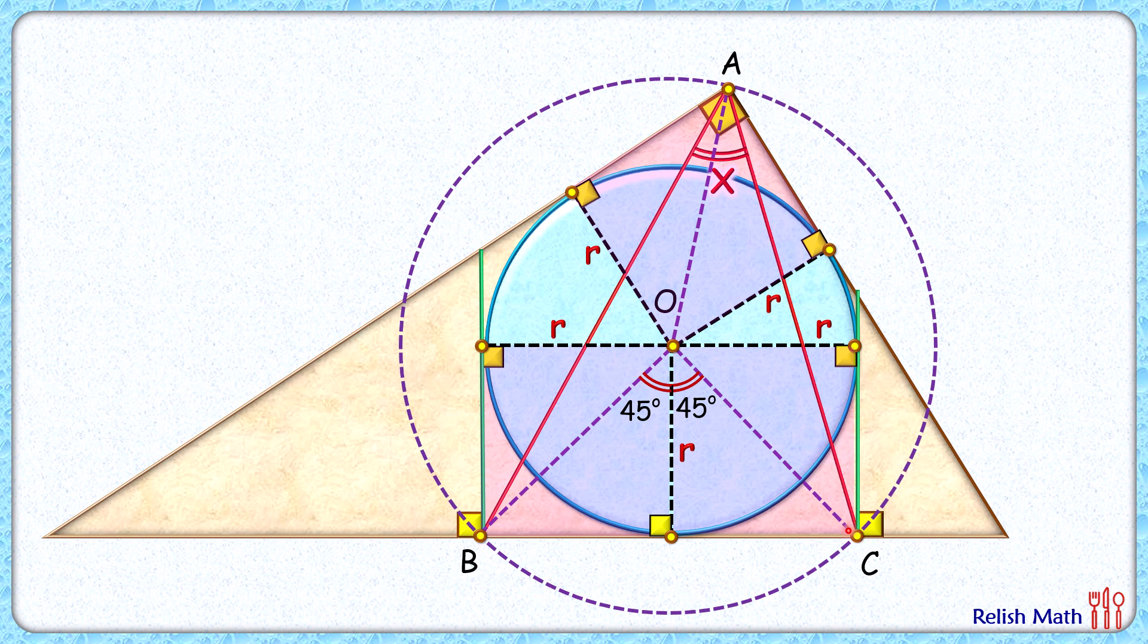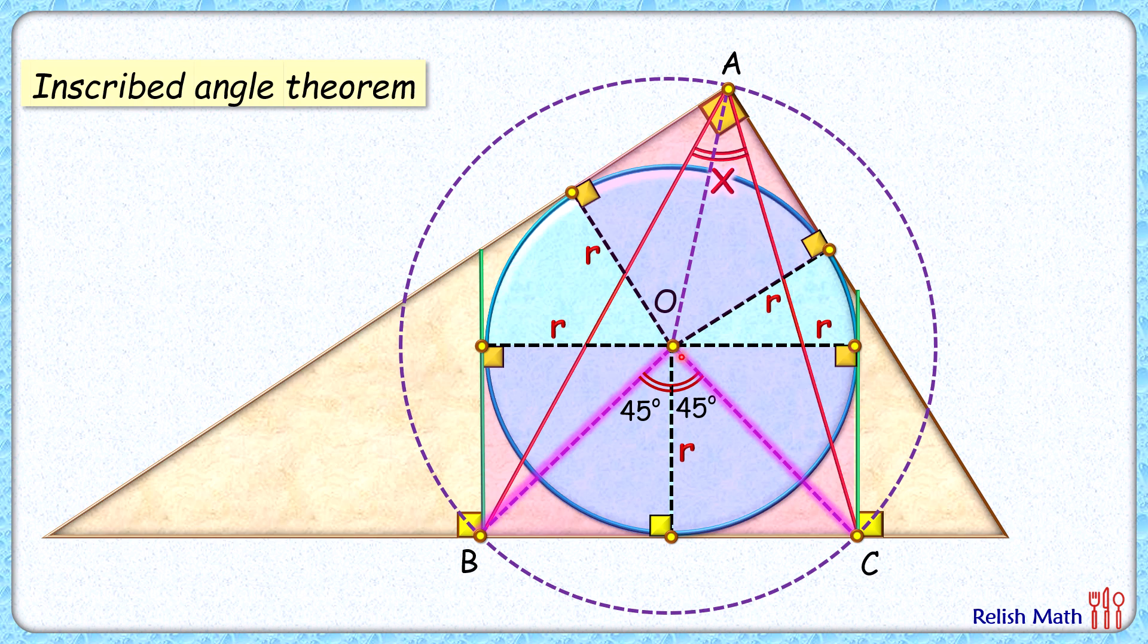Now here, with respect to this big purple circle, we'll apply the inscribed angle theorem. That is, this chord BC is making an angle of 90° at the center, and by the theorem it will make half of that angle at the circumference. That means this angle x here is half of 90°, or 45°.